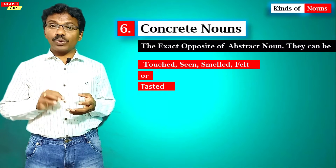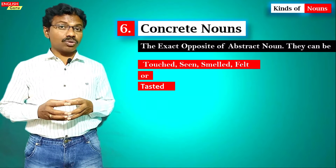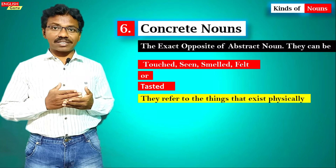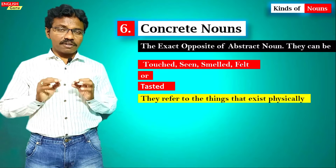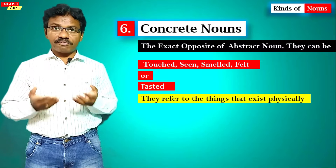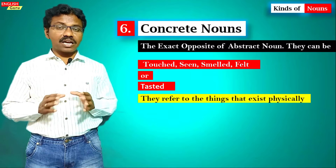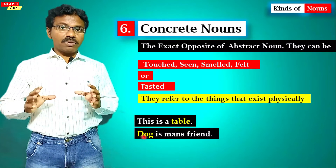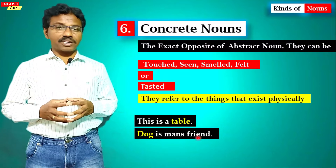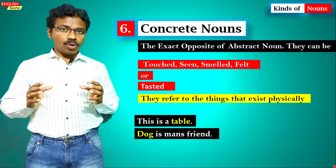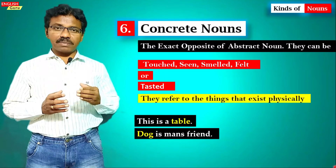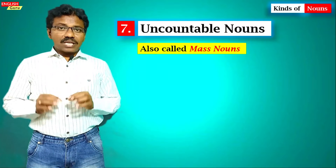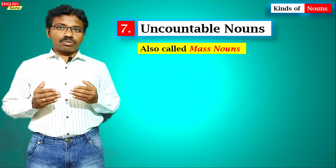Concrete nouns refer to things that exist physically — they are not ideas but physical existences. 'This is a table' — 'table' is a concrete noun. 'Dog is man's best friend' — 'dog' is a concrete noun. On the whole, we can say that except for abstract nouns, the remaining nouns are concrete nouns.